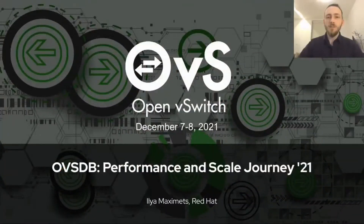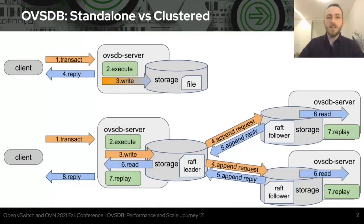Hello everyone, my name is Ilya Maximets and this talk is about OVSDB performance and scale related changes made during the last year. This slide deck starts with an overwhelming diagram of how transactions work in different OVSDB service models. The main takeaway is that clustered databases do way more work while processing transactions than the standalone one. When I'm talking about clustered database in this presentation, I'm talking about clusters of three servers.